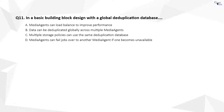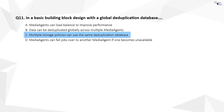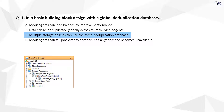Question 11. The correct answer is C. The global deduplication policy enables deduplication across multiple storage policies that use a common set of disk libraries and a deduplication database (DDB). After creating a global deduplication policy, you can create a storage policy, or a storage policy copy, and assign it to a global deduplication policy.